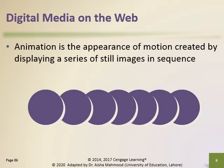Many web pages use animation, which is the appearance of motion created by displaying a series of still images in sequence. For example, text that animates by scrolling across the screen can serve as a ticker to display stock updates, news, sports, weather or other information. Web-based games often use animation.